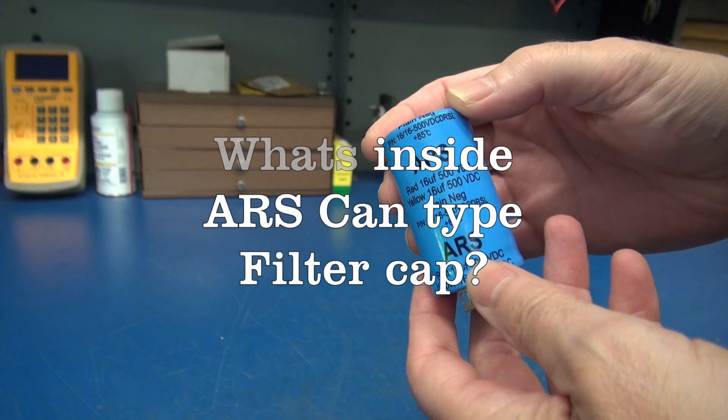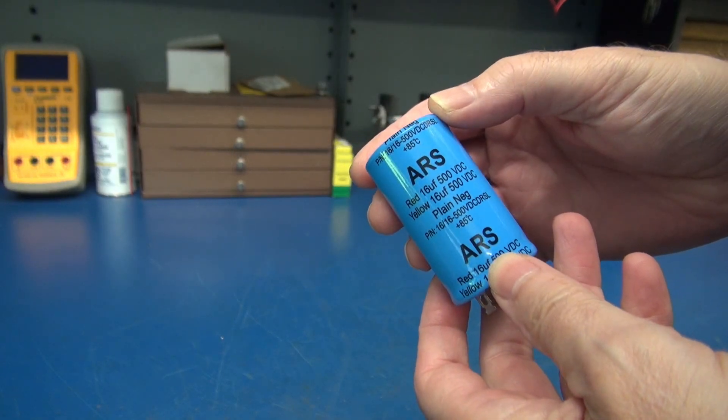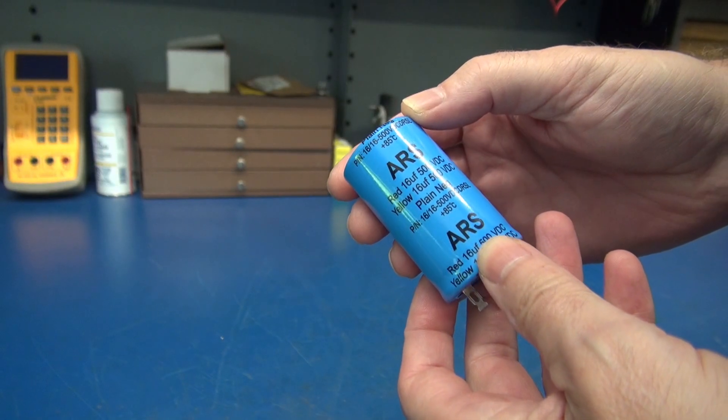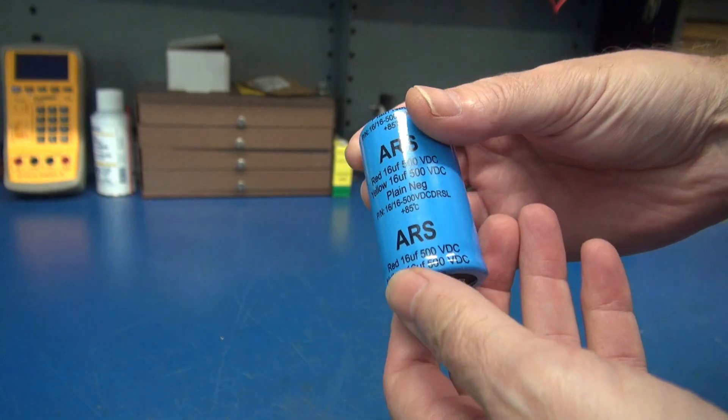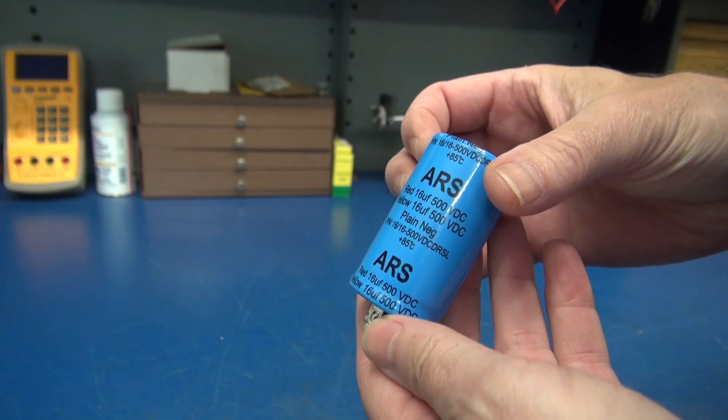In this video, we are going to open up and inspect this ARS dual 16 microfarad cap at 500 volt DC, see what the internal workings are.